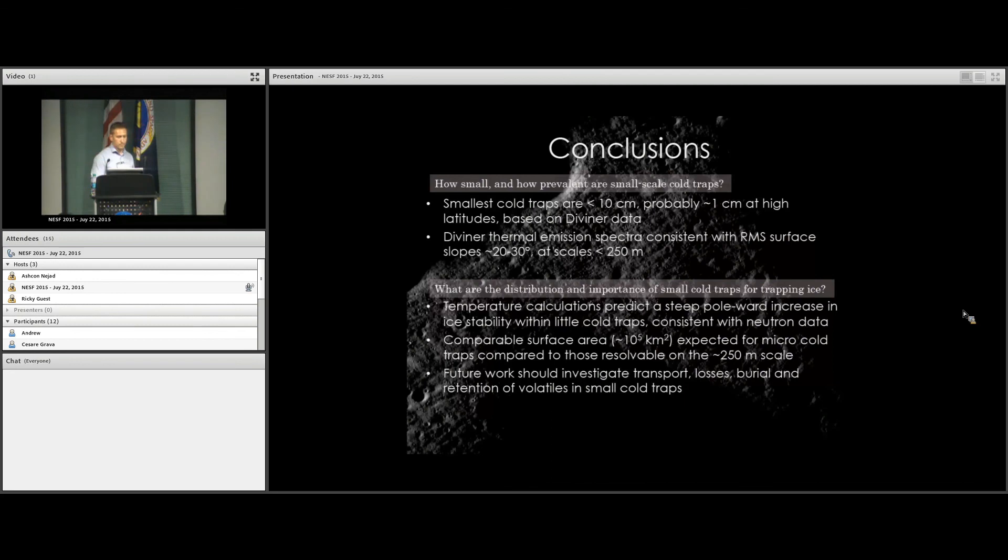So the conclusions: the smallest cold traps on the moon are less than 10 centimeters, probably more like a centimeter. The amount of shadow we find is consistent with an RMS surface slope or roughness of 20 to 30 degrees at scales less than the Diviner footprint of 250 meters. The distribution of these cold traps based on both the data and the model calculations shows that they should be prevalent above about 75 degrees latitude, with a comparable surface area to the large PSRs that we've traditionally mapped.